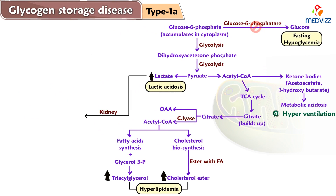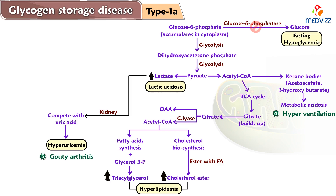Since there is lactic acidosis, lactate is elevated. In the kidney, lactate competes with uric acid for excretion, leading to hyperuricemia. Hyperuricemia is a sign seen in Von Gierke Disease, and it gives rise to gouty arthritis because uric acid crystallizes in the joint space. Patients may show uric acid crystals in the joints, causing gouty arthritis signs and symptoms, and uric acid crystals can also be seen in the urine.